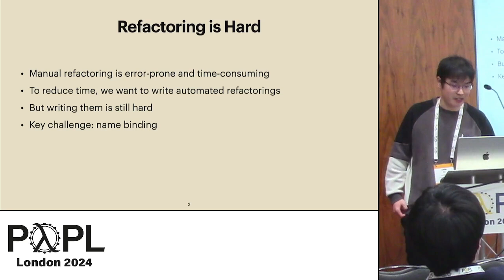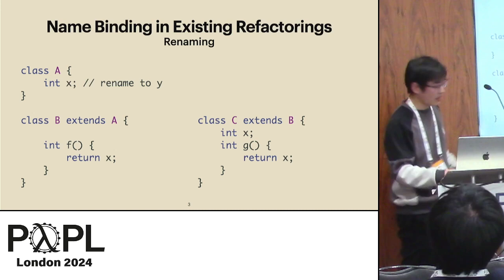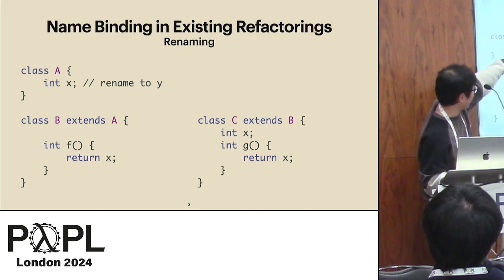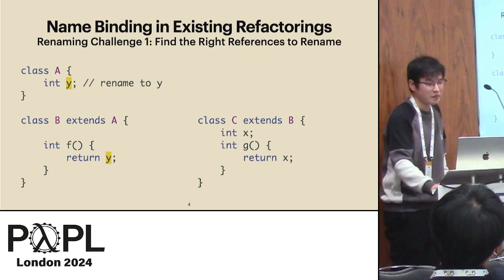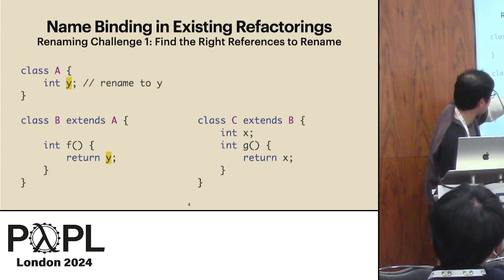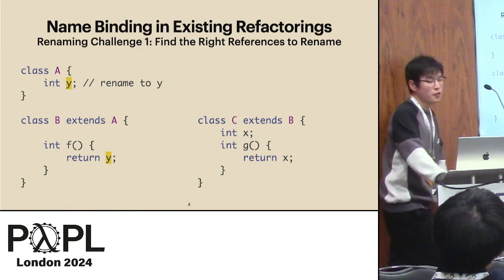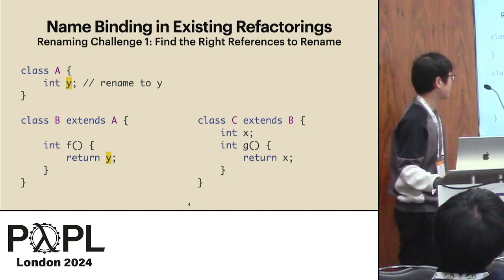Why do we say name-binding is a key challenge? Let's look at an example. Assume we have this program and we want to rename X in class A. To do this, you also have to find all references to X in class A — for instance, X in class B. A correct renaming refactoring would only rename the reference X to Y in method F, not the X in method G, because that X is resolved to X in class C.